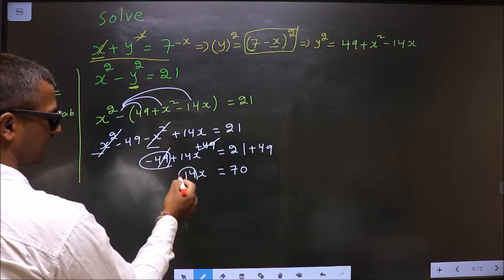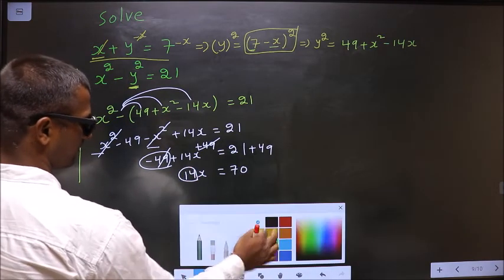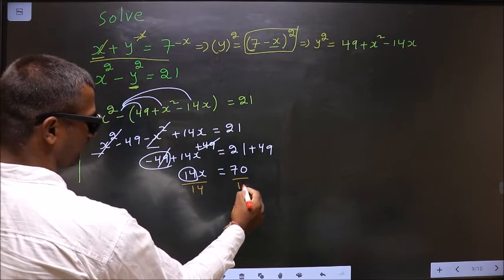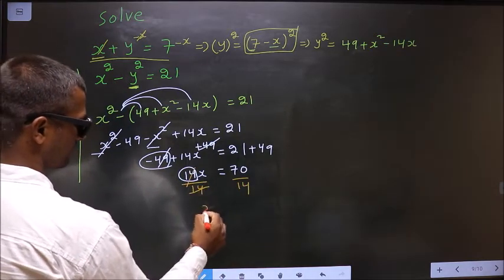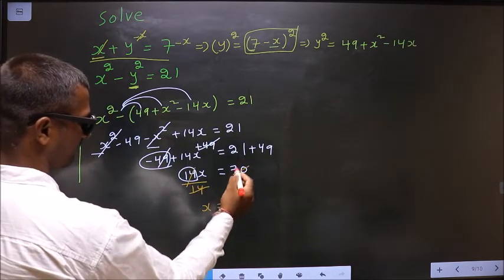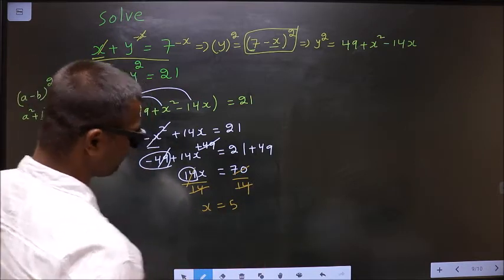So now to get x, I should remove 14. So divide by 14. So 14 once and here 5 times. So x is 5.